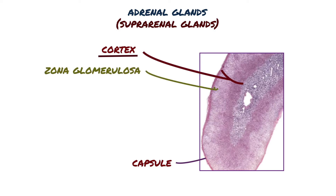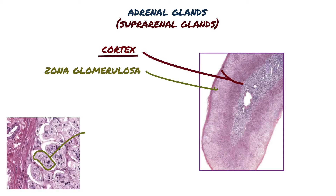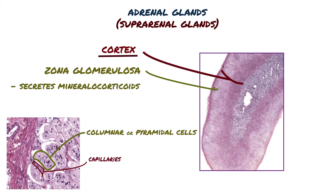The zona glomerulosa, immediately inside the capsule and comprising about 15% of the cortex, consists of closely packed, rounded or arched cords of columnar or pyramidal cells with many capillaries. The steroids made by these cells are called mineralocorticoids because they affect the uptake of sodium, potassium, and water by cells of renal tubules. The principal product is aldosterone, the major regulator of salt balance, which acts to stimulate sodium reabsorption in the distal convoluted tubules.